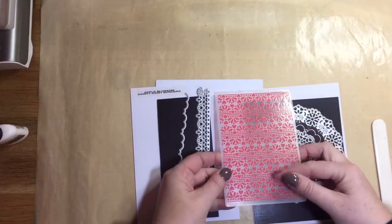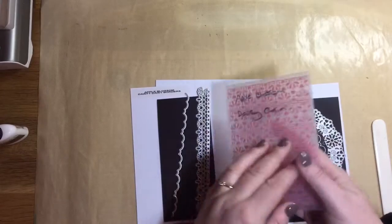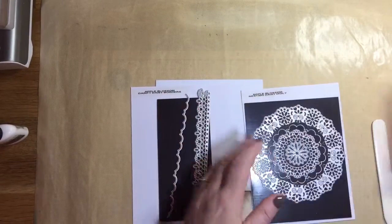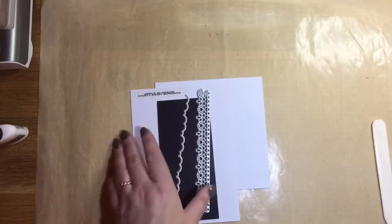There's also an embossing folder that goes with these called the Daisy Chain. I write on the back of my embossing folders in permanent marker so I don't forget, because once they're in my drawer I do tend to lose track of where I got things.